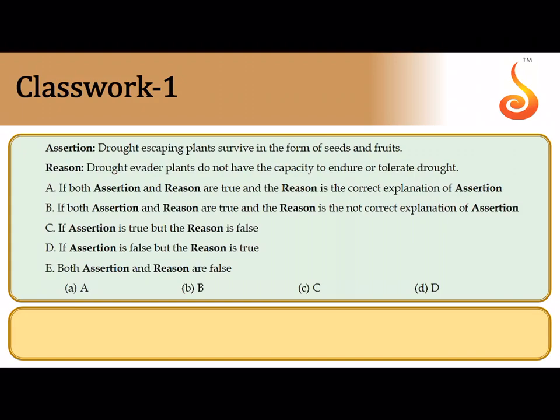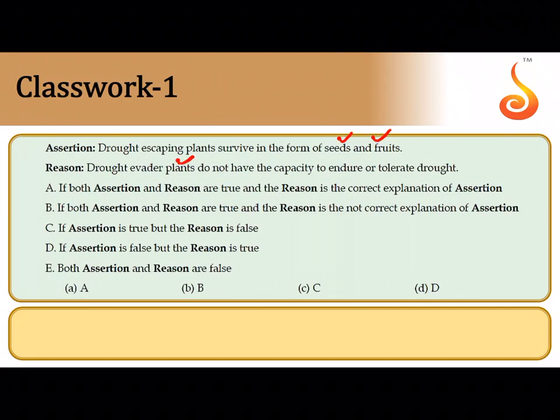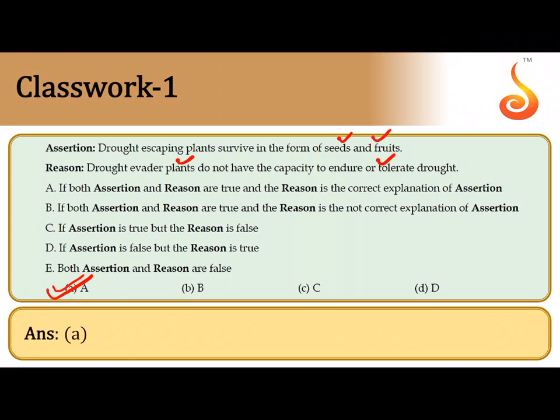Now moving to the last chapter, Organisms and Populations. Question one is an assertion-reason type. The assertion says drought-escaping plants survive in the form of seeds and fruits, and the reason is that these plants do not have the capacity to tolerate drought. Both assertion and reason are true, and the reason is the correct explanation of the assertion, because they survive as propagules in seed and fruit form to perennate and overcome the unfavorable drought condition.